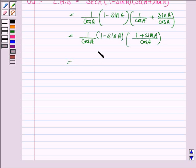So again this is equal to cos A into cos A which is cos square A. And in the numerator we have 1 minus sine A into 1 plus sine A upon cos square A.